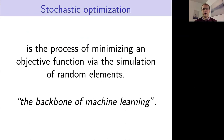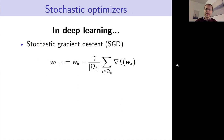To start with, I'd like to set the scene with a very general definition of what we mean by stochastic optimization. It's really any process where we're minimizing an objective function, usually unconstrained, via the simulation of random elements. There's a common catchphrase that goes with stochastic optimization: it's really the backbone of machine learning. Stochastic optimization is really a key ingredient in the success of deep learning to date.